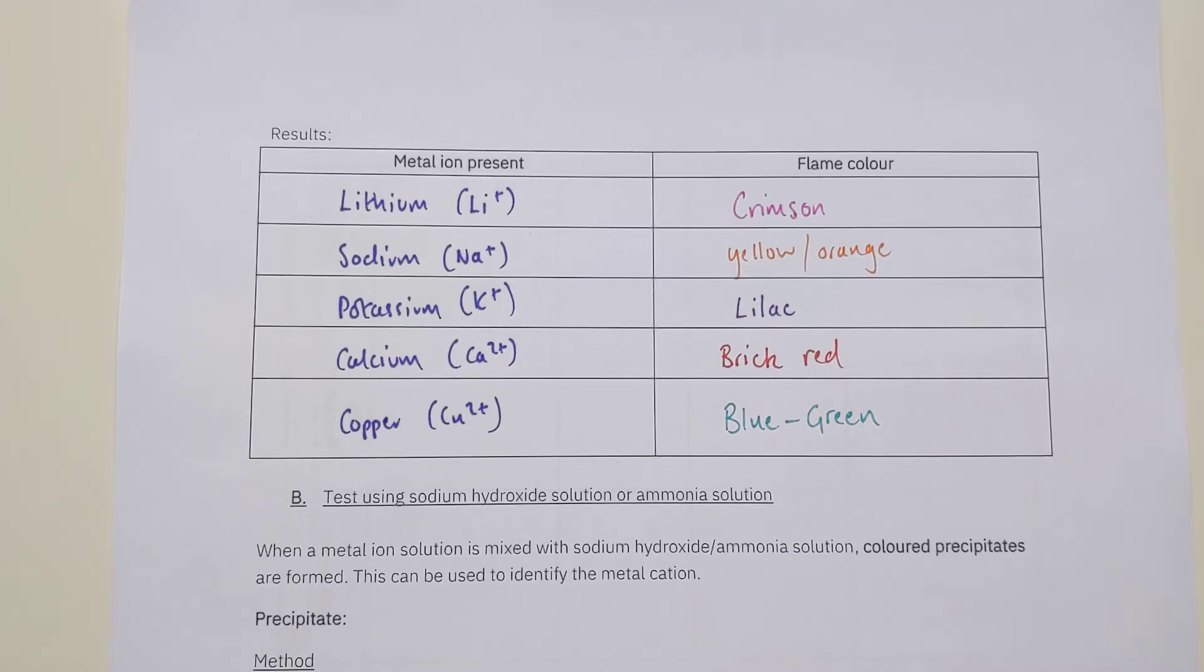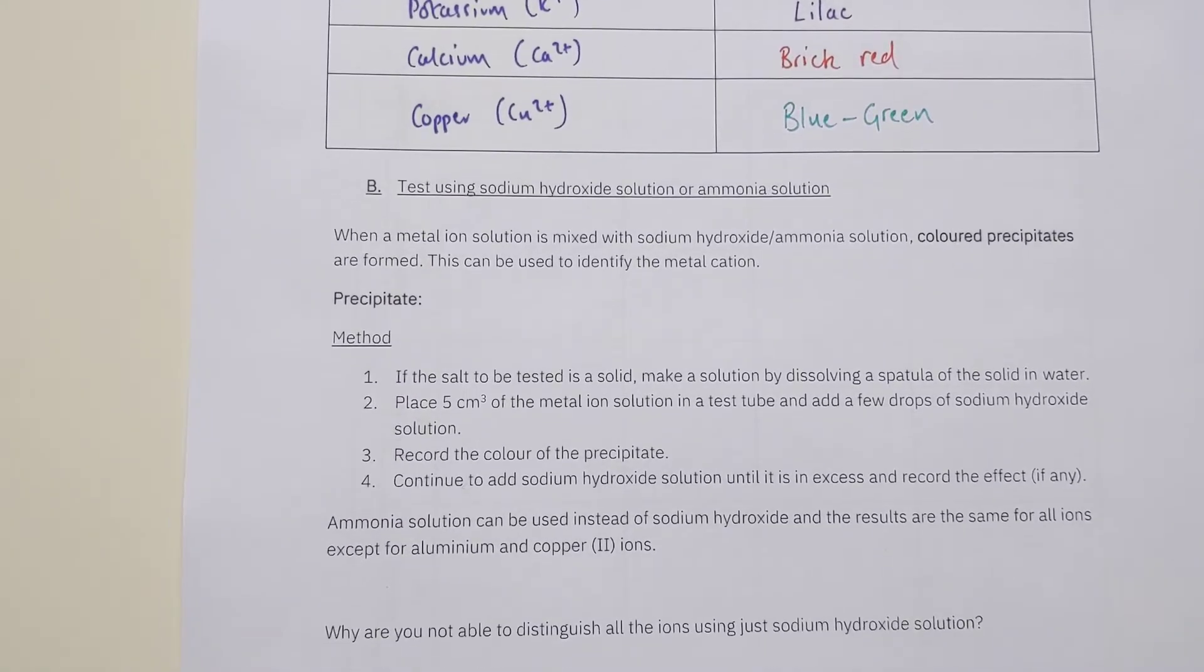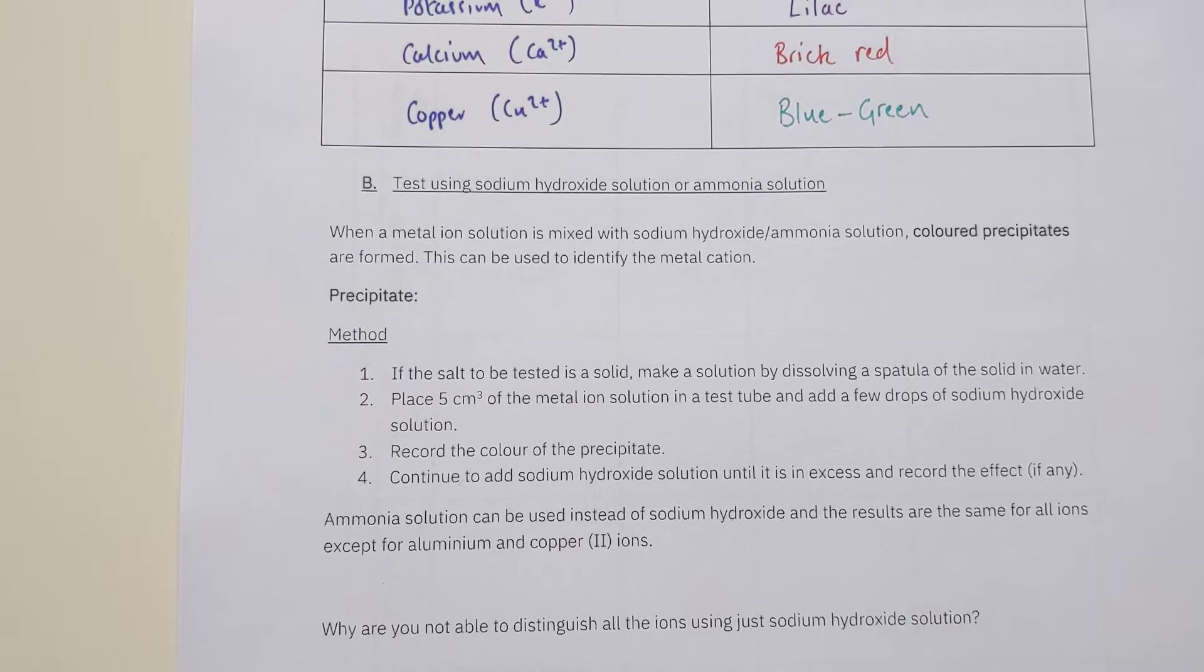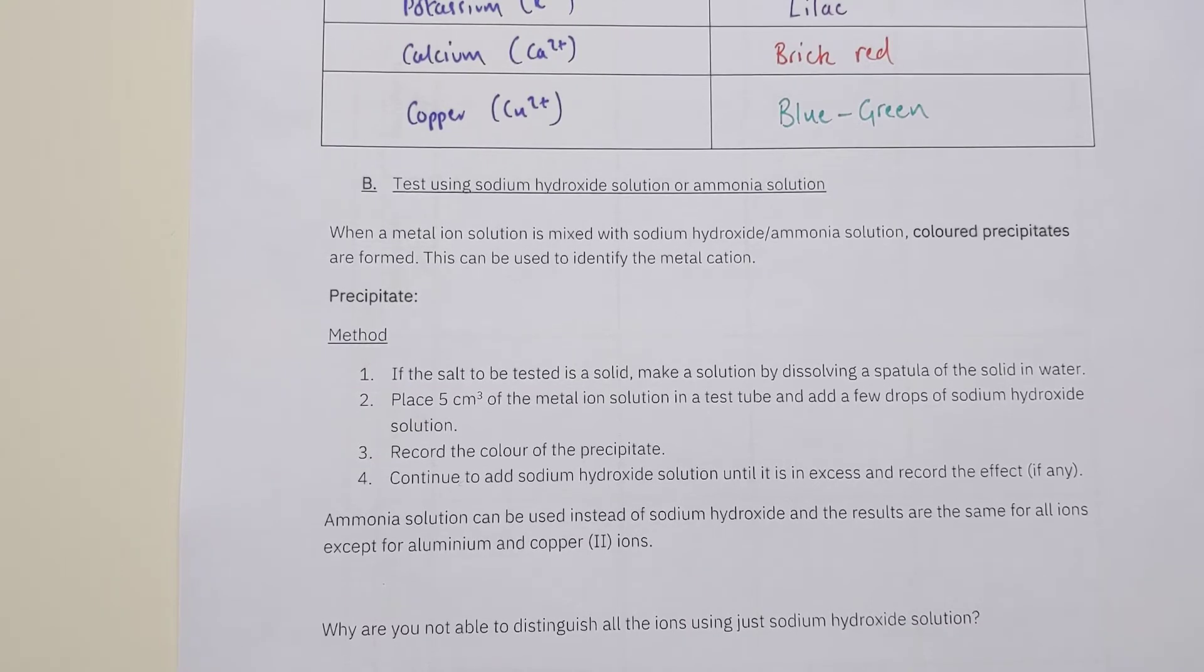We've got another test we can use if our flame test doesn't work for a particular compound, particular ion. It's known as the sodium hydroxide or ammonia test, and you might say it's called the precipitate test. It's a little bit new to chemistry here, but it's not too complicated. I'm going to explain that with a bit of paper.